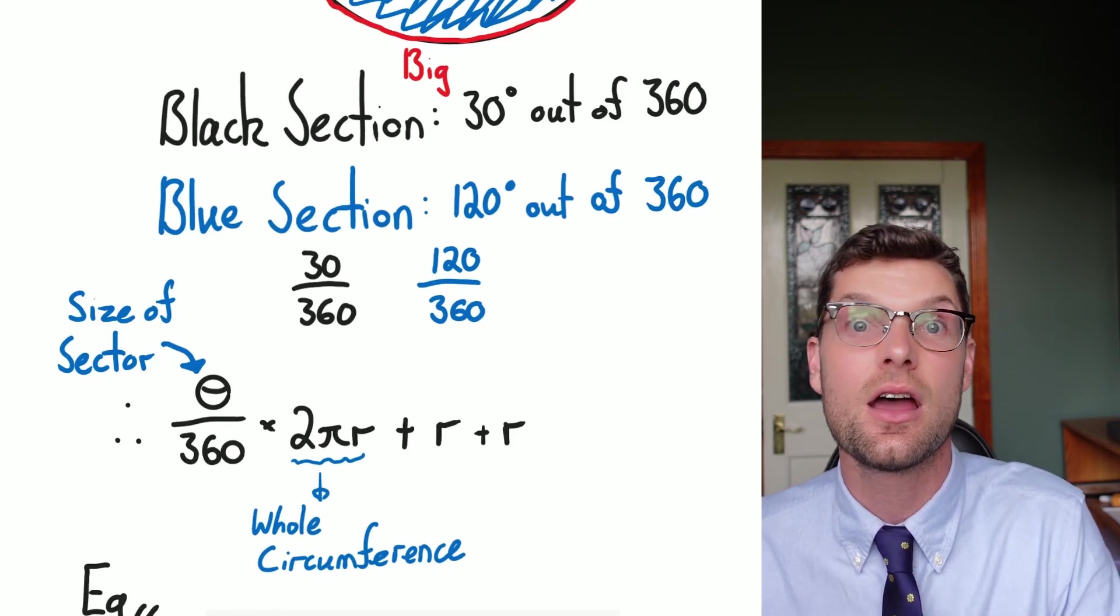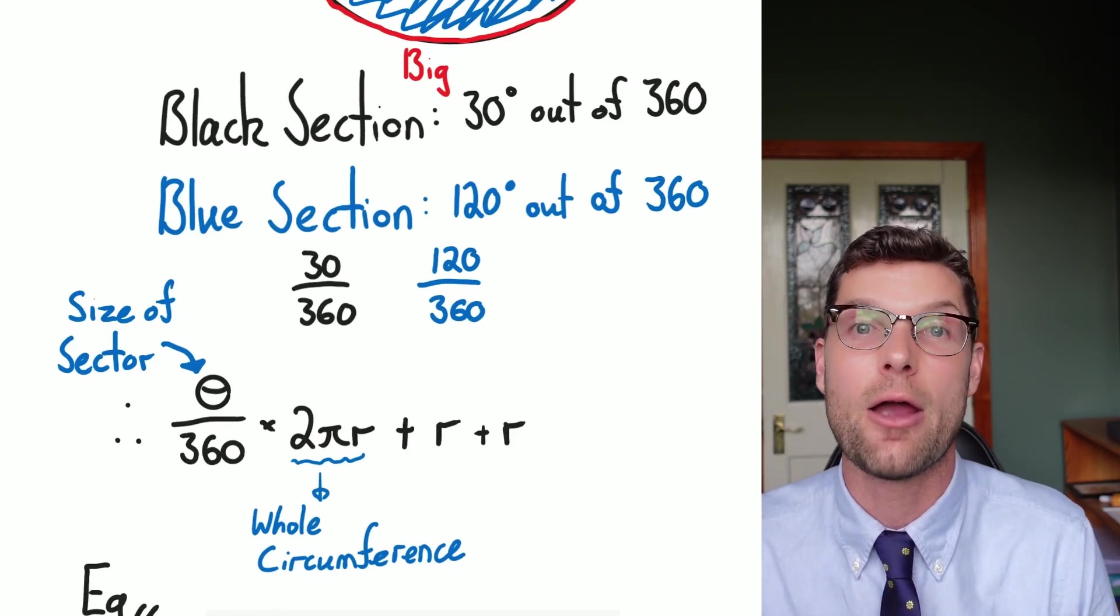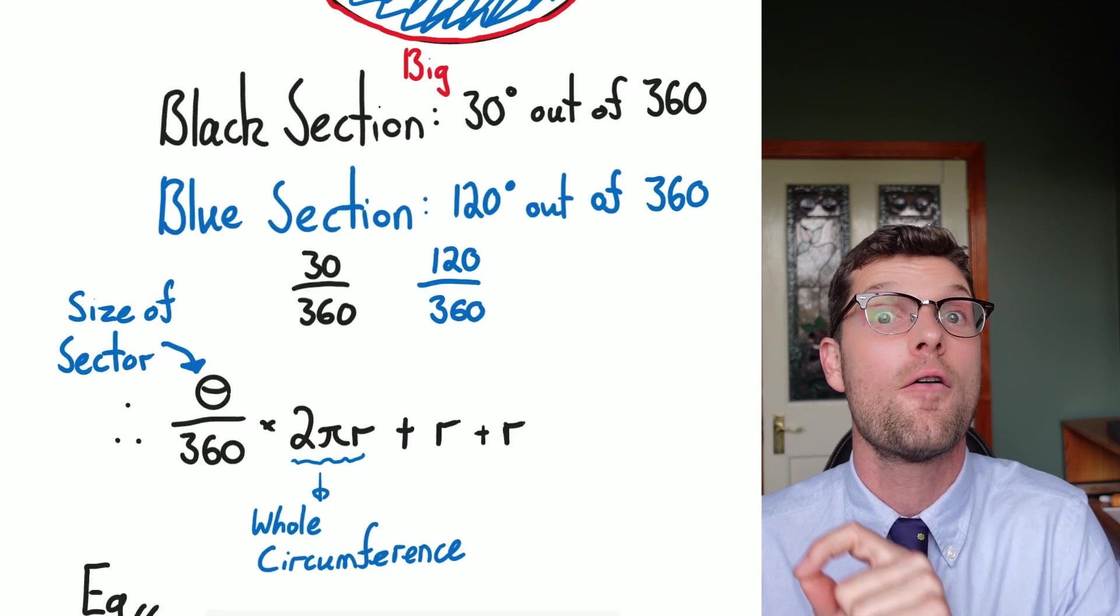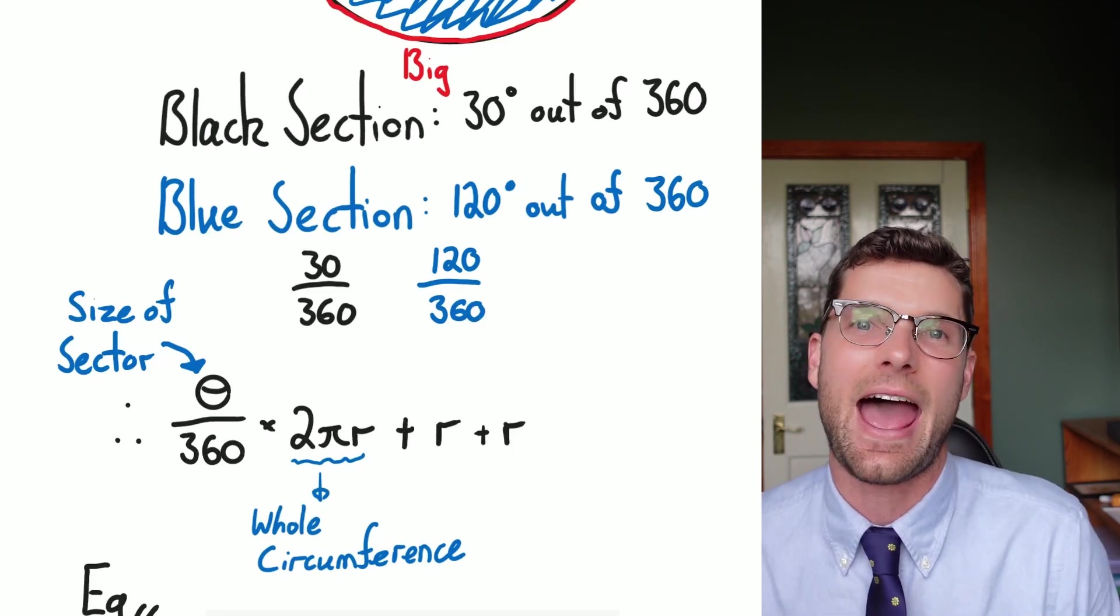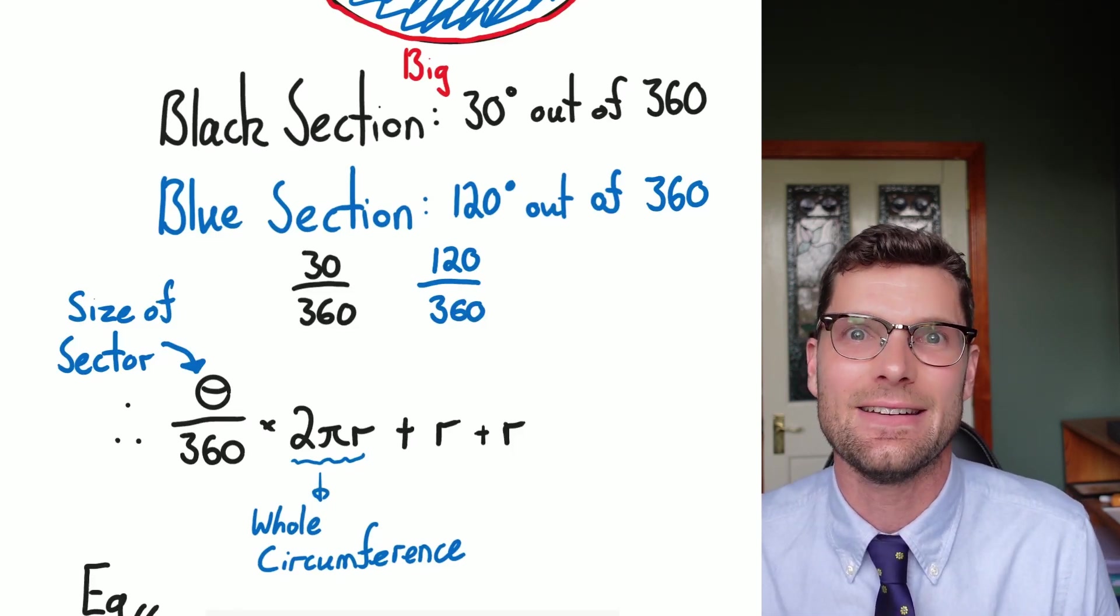Multiplied by the circumference, because that's going to be the same the whole way around and we've already adjusted for how much of it we have, and then we have to add the 2r at the end.